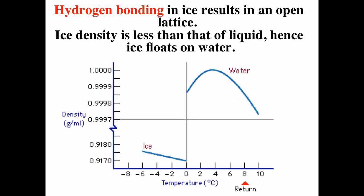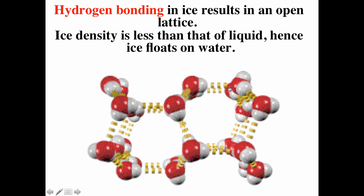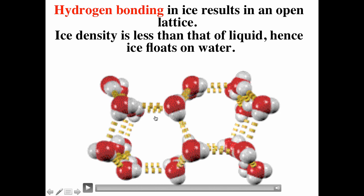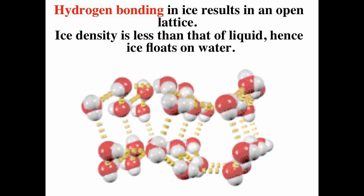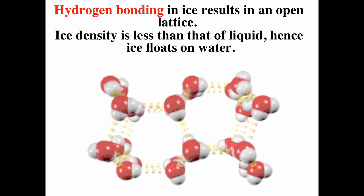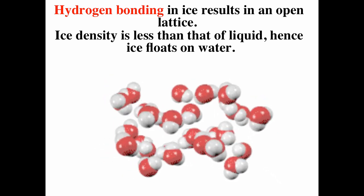Unusually, water's solid form is less dense than its liquid form. A density-vs-temperature plot shows ice is less dense, with a large jump in density upon melting. In the solid, hydrogen bonds are optimized in a fairly open lattice. As you heat it, molecules move relative to one another and you get a denser liquid. Ice is held together as a solid by hydrogen bonds; when it melts, the open structure collapses and liquid water packs more efficiently.